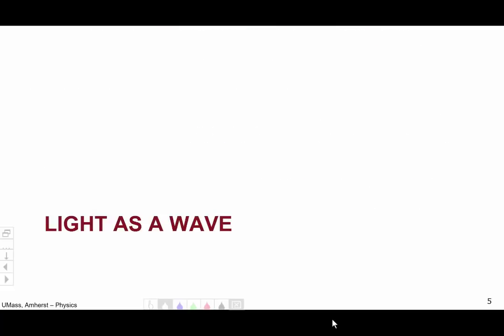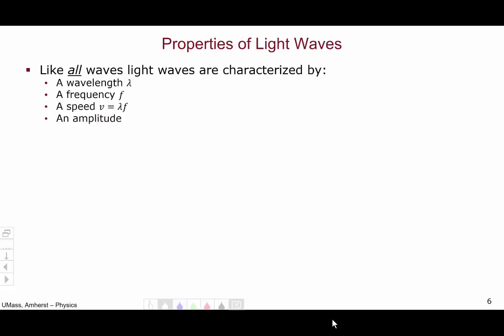So that's where light comes from, accelerating charges. Now let's move into the second part of this video where we explore light's identity as a wave. So what are some properties of light waves? Like all waves, light waves are characterized by a wavelength, a frequency, a speed, which follows the usual relationship of v equals lambda f, and an amplitude.